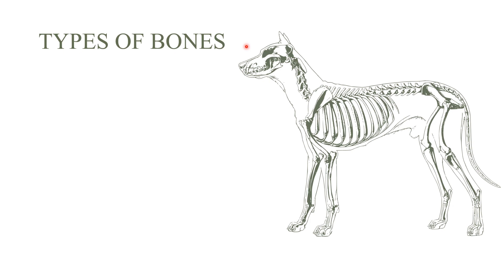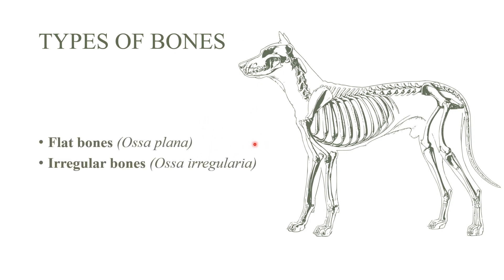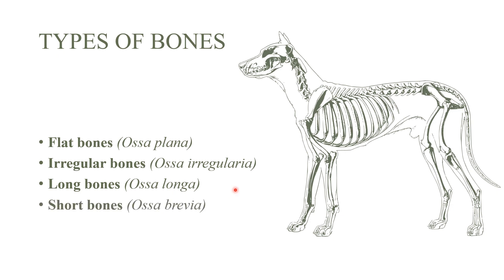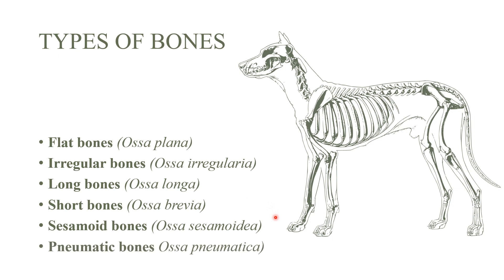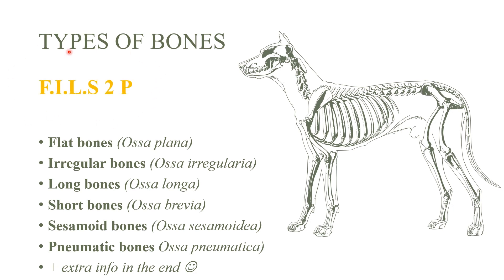Today we'll talk about types of bones and their classification. We'll begin with flat bones (ossa plana), then move on to irregular bones (ossa irregularia), long bones (ossa longa), short bones (ossa brevia), sesamoid ones, pneumatic ones, and if you stay till the end you'll get some extra info. To make these types easier to remember, I created a little combination of letters.